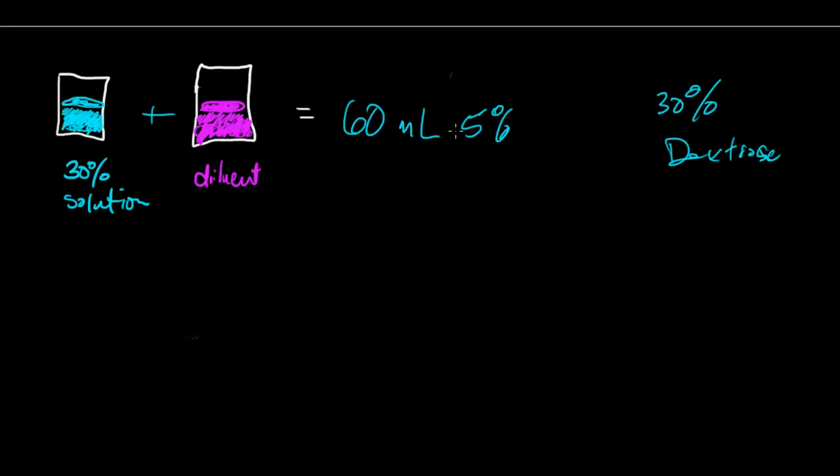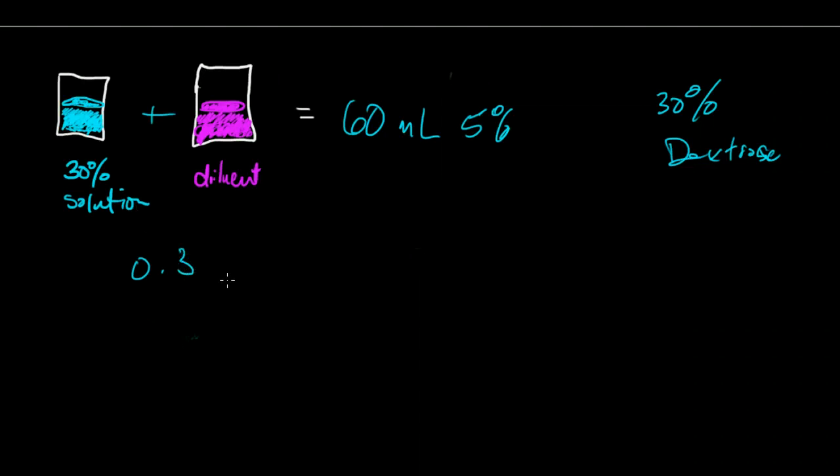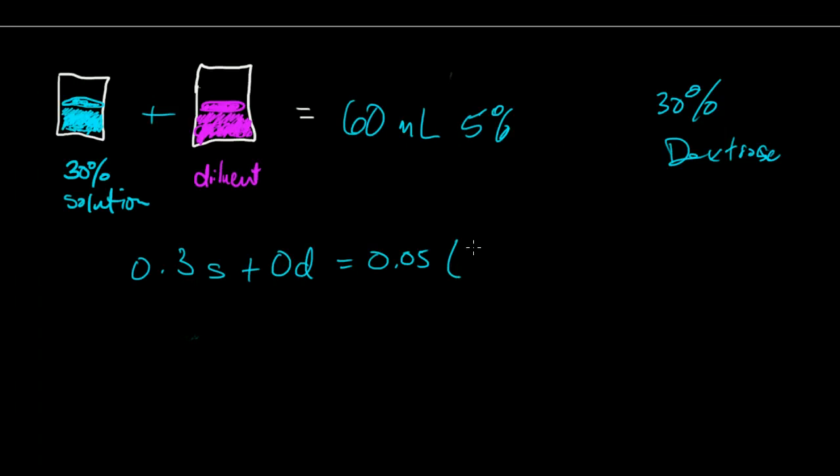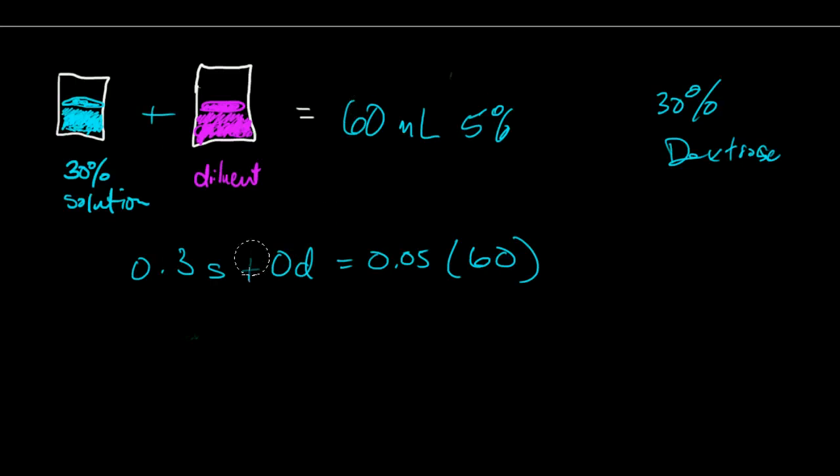So remember that real important calculation for us was the 0.3 of the solution plus our 0% of the diluent and that will be the 0.05% of the 60 milliliters. Now remember that the diluent doesn't matter for our purposes. It goes away because it has absolutely no dextrose in it whatsoever.